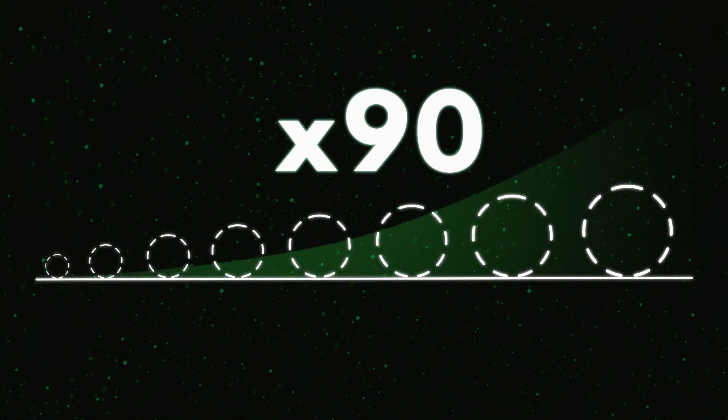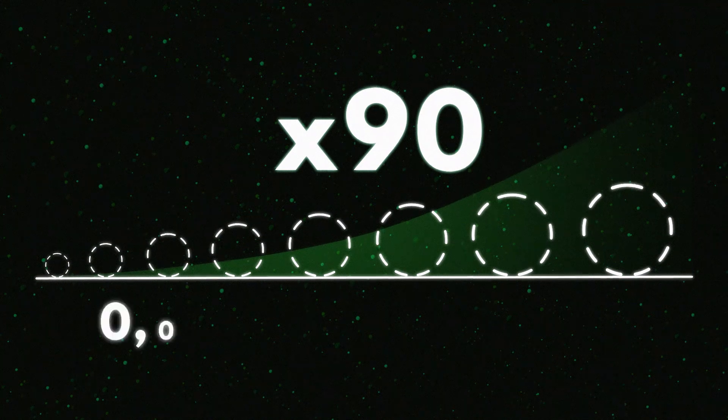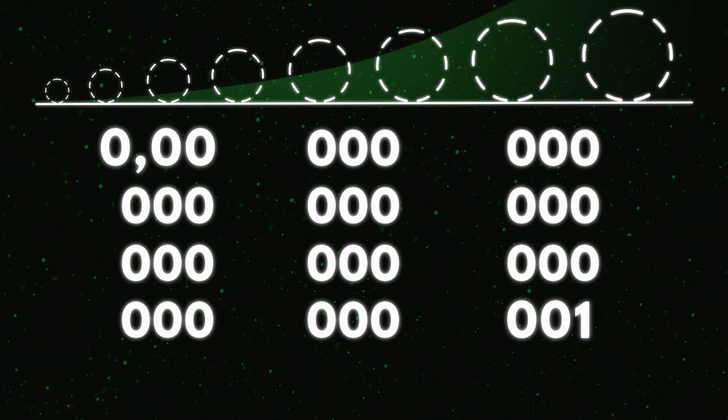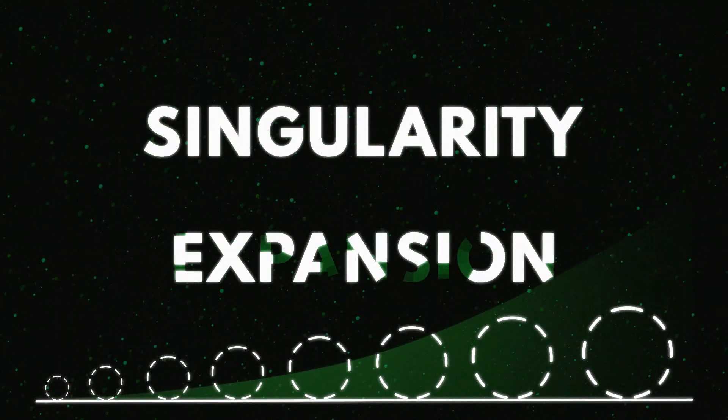The universe grew exponentially, doubling its size 90 times in an incredibly short period of time. A hundredth of a billionth of a trillionth of a trillionth of a second to be precise. This incredible growth spurt is called the Singularity Expansion.